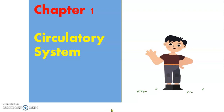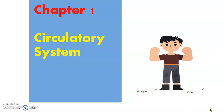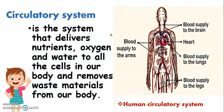Hello, my dear students. In this chapter, we're going to learn about the circulatory system. The circulatory system is the system that delivers nutrients, oxygen, and water to all the cells in our body and removes waste materials from our body. This is the human circulatory system.